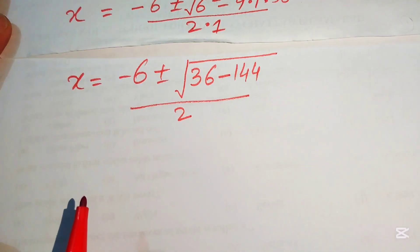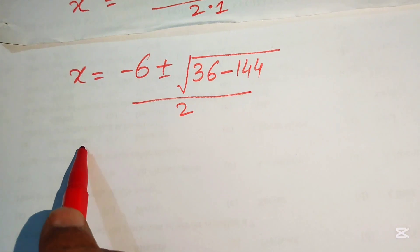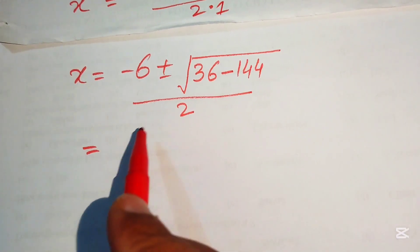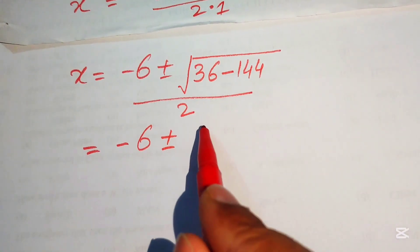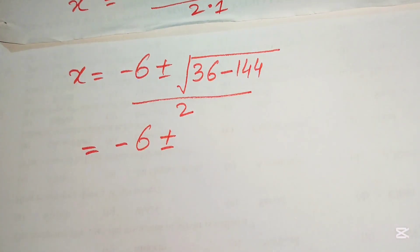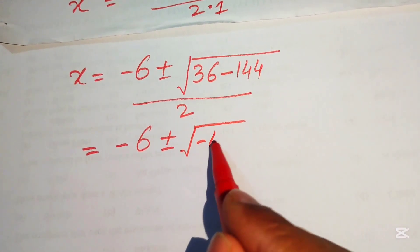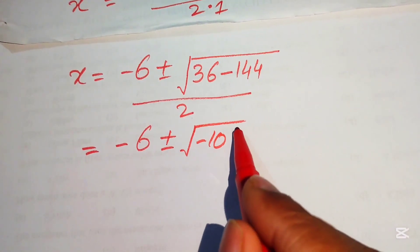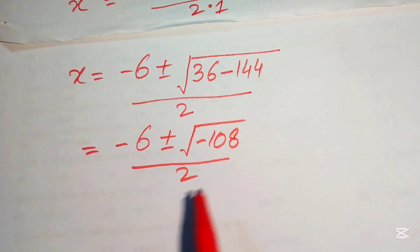Simplifying, 36 minus 144 equals negative 108, so we have x equals negative 6 plus or minus the square root of negative 108, divided by 2.